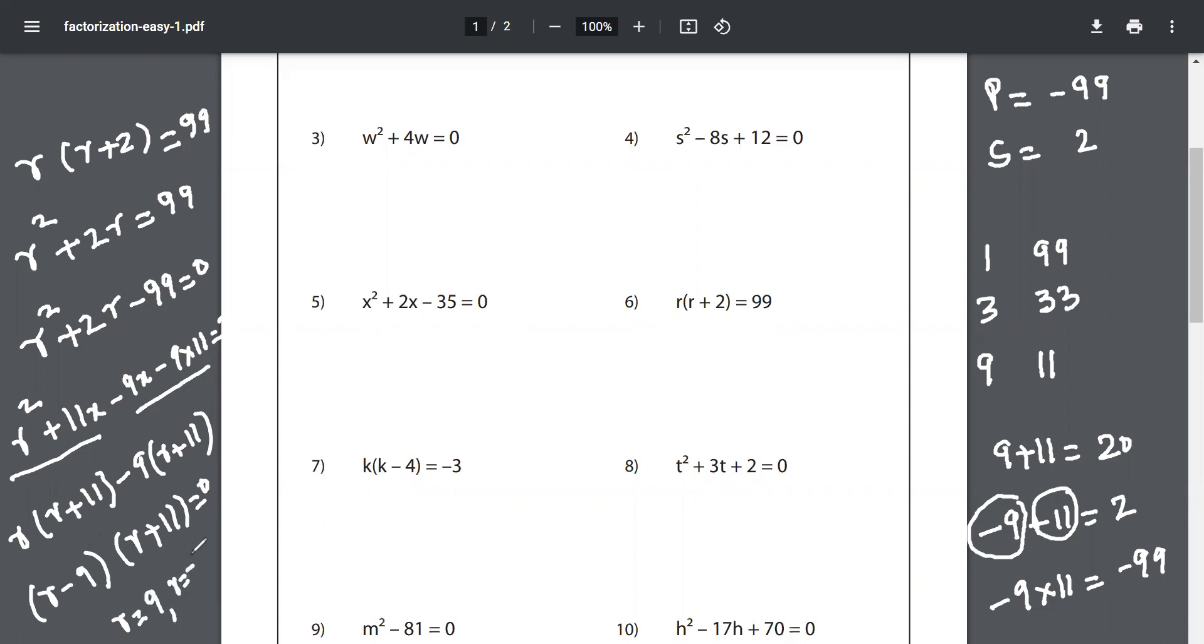So r = 9 and r = -11. This is not what they are asking, but I'm just solving the entire thing for you. So the answer for this question is (r - 9)(r + 11) = 0. This is factorization.